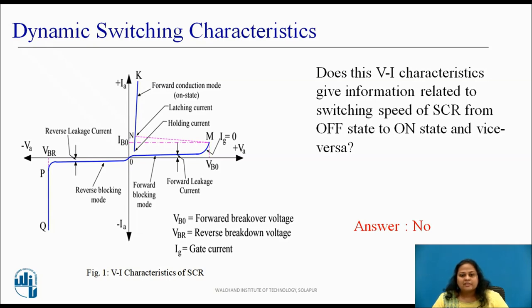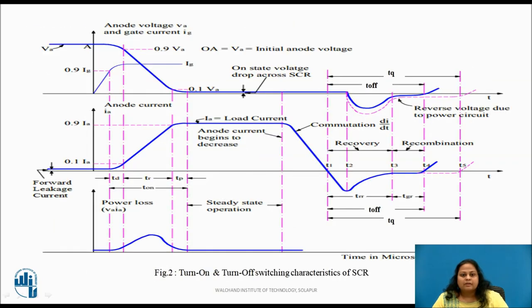The answer is no. This VI characteristics is static characteristics and it gives no information about the speed at which the SCR switches from forward blocking state to conducting state and vice versa. However, the transition from one state to another does not take place immediately. It takes a finite period of time to turn on and off. During this turn on and turn off process different voltage appears across the SCR and different current flows through it. The time variations of voltage across it with the current through SCR during turn on and turn off constitute the switching characteristics of SCR.